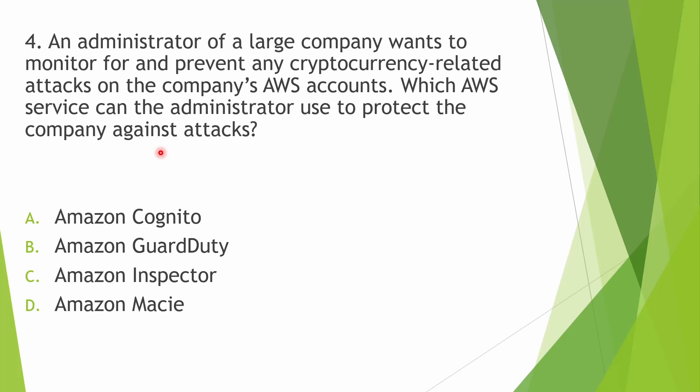An administrator of a large company wants to monitor for and prevent cryptocurrency-related attacks on the company's AWS accounts. Which AWS service can the administrator use? Cognito is not related to attacks — it is for authentication, authorization, and user management. GuardDuty is a continuous security monitoring service that analyzes VPC flow logs, CloudTrail data event logs, management logs, and DNS logs. Inspector is proactive while GuardDuty is reactive. Macie uses machine learning to discover and protect sensitive data, not attacks. GuardDuty is the answer — it is the service that protects against cryptocurrency-related attacks.